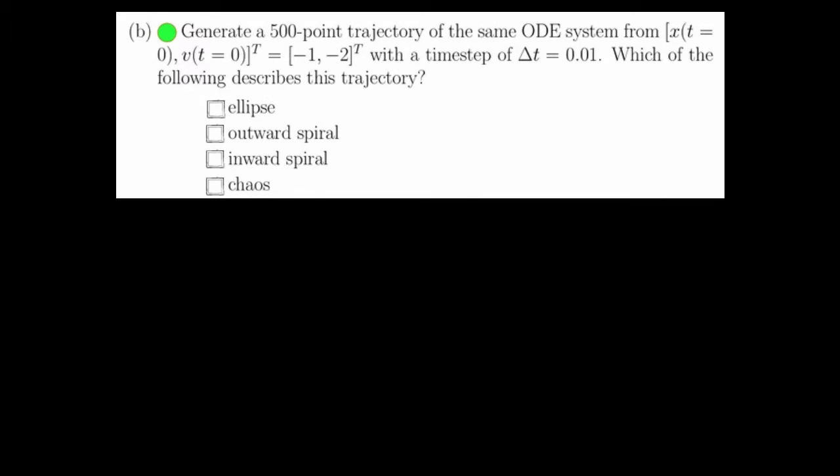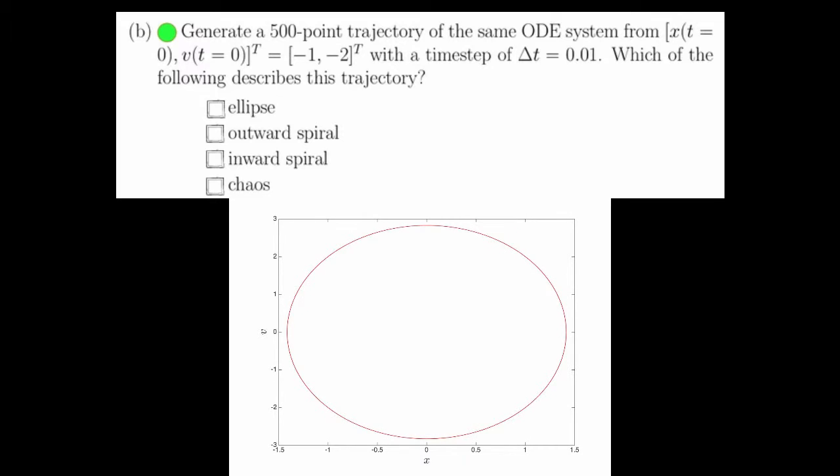For part B, we need to generate a 500-point trajectory of the same ODE system, with a time step of 0.01, and see which of the following describes the trajectory best. This plot is precisely that trajectory, and as you can see, an ellipse is a good description of this.